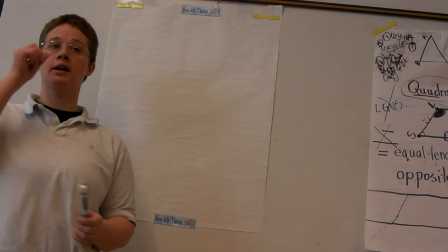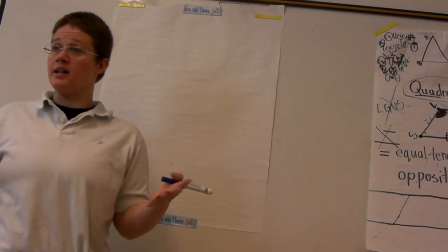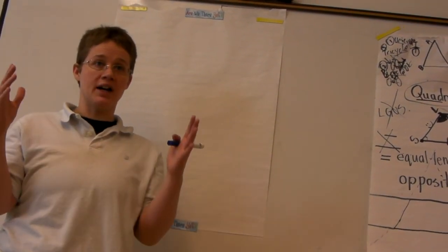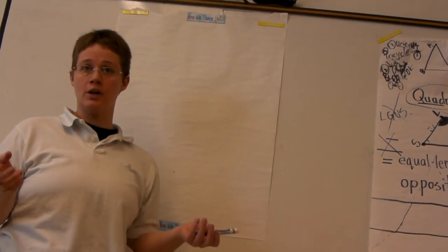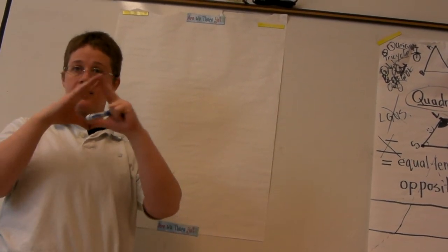A polygon, a regular polygon is a shape where all the sides and all the angles are equal, and it connects, it's closed.